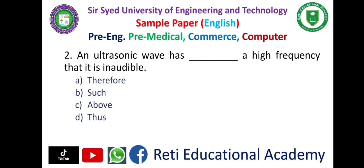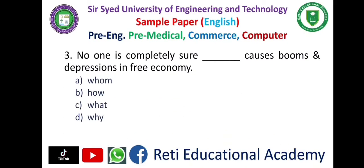Question 2: 'An ultrasonic wave has dash a high frequency that it is inaudible' — A. Therefore, B. Such, C. Above, D. Thus — and the correct answer is B. Such. An ultrasonic wave has such a high frequency that it is inaudible. Question 3: 'No one is completely sure dash causes booms and depressions in free economy' — A. Home, B. How, C. What, D. Why — and the correct answer is C. What.